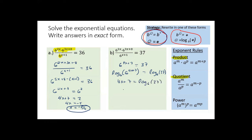And from here, solving for x, I obtain 4x is equal to log base 6 of 37, then subtract 7, and now I divide by 4. And this is the solution to the equation in part b.